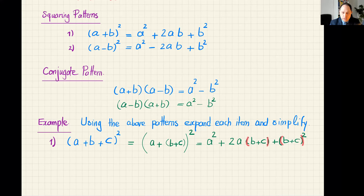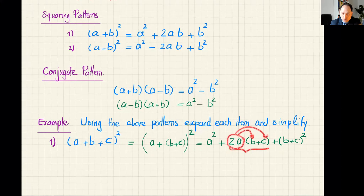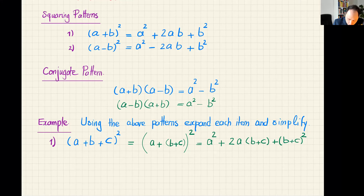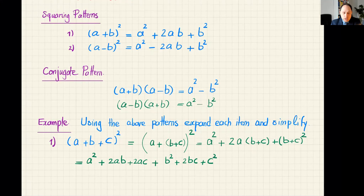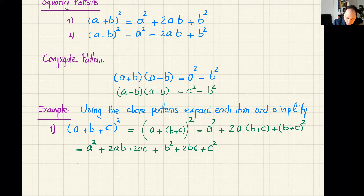For (b+c)², I can use the squaring pattern again: b² + 2bc + c². So the full expansion is a² + 2ab + 2ac + b² + 2bc + c². This is the trick — even though we have three terms, we view it as two and apply the squaring pattern, then continue until no brackets remain.